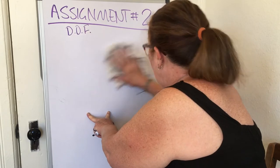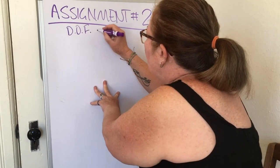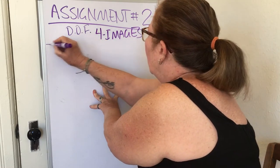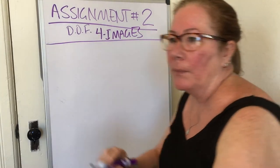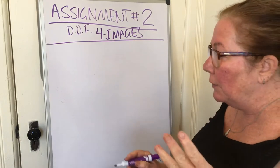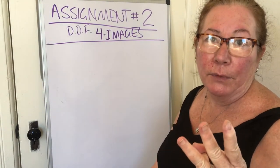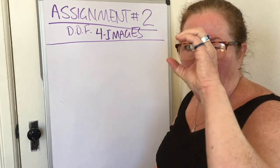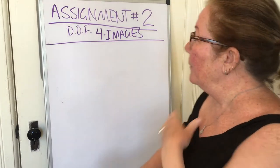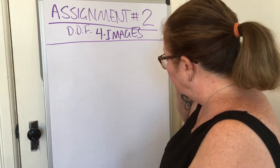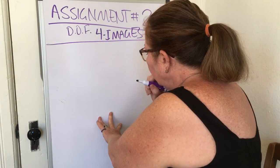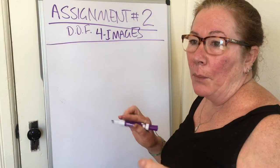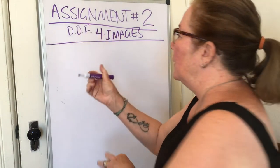For this assignment we're going to end up with four images total. The first three are going to use a narrow depth of field. To do that, what do we need? A large aperture. So the first three, we're going to take a photo of three different objects and focus on each one individually.